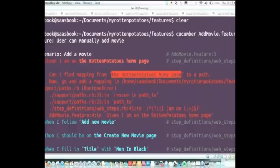It's very conversational. Now, go and add a mapping into the path.rb. Here's the full path name, so you don't get lost where it is. And add the missing path. So we will now go to where it's asked for, path.rb here, in myRottenPotatoes features support path, alright?